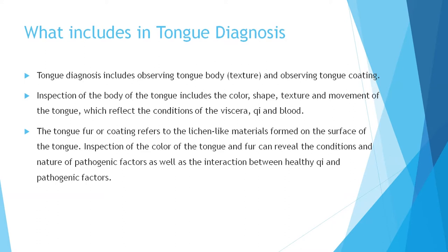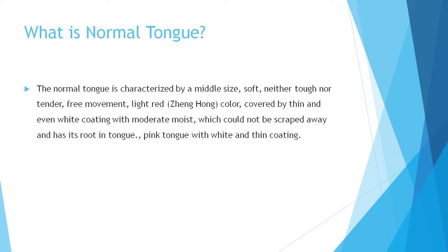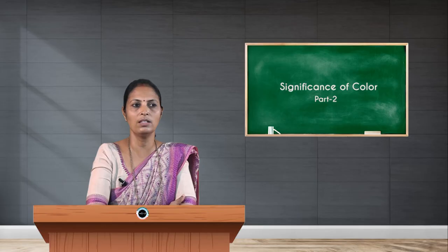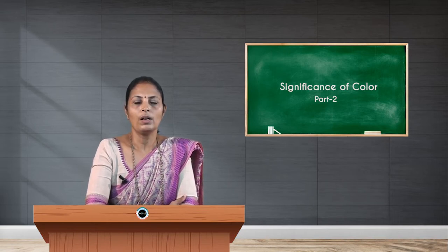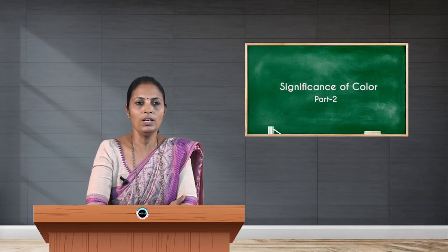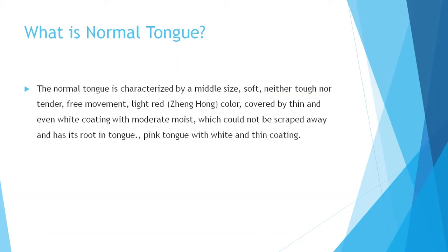Inspection of the body of the tongue includes the color, shape, texture, and movement of the tongue, which reflect the conditions of viscera, chi, as well as the blood. The tongue coating refers to the disease internal conditions of the organs. Inspection of the color of the tongue can reveal the nature of pathological factors and their interaction between healthy chi and pathogenic factors.